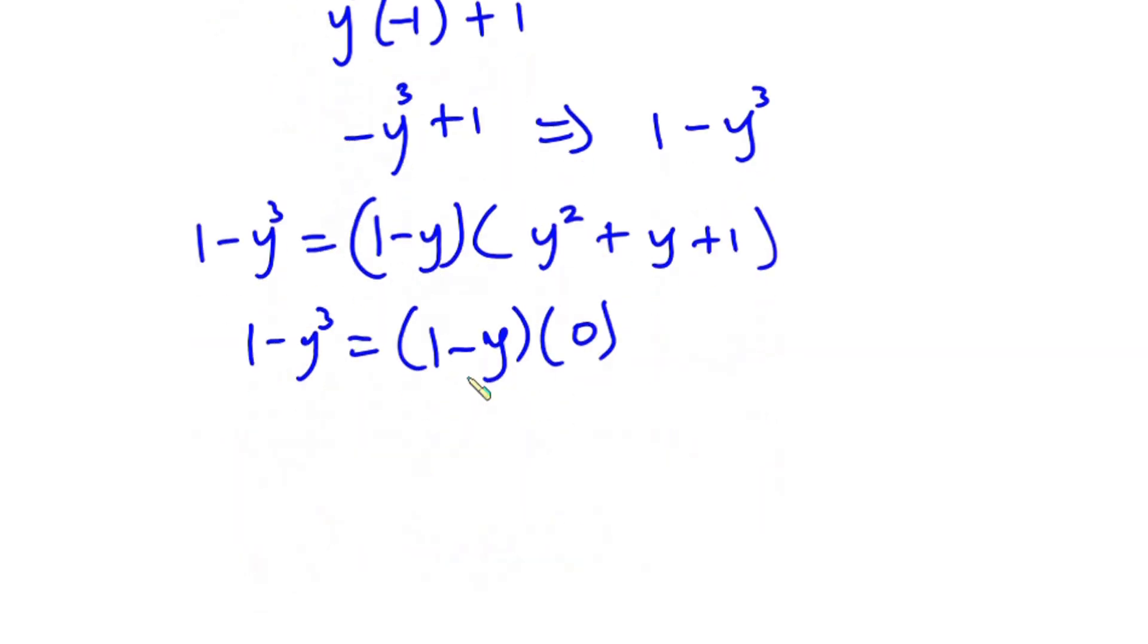And 0 times any number is 0. So we can conclude that y to the fifth power plus y to the fourth power plus 1 is equal to 0.